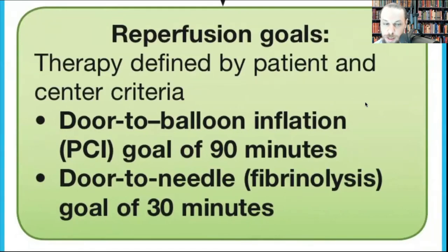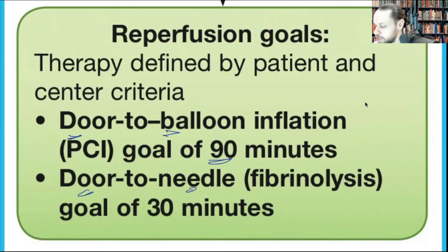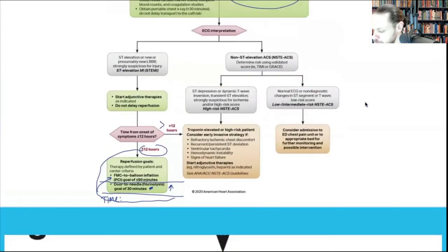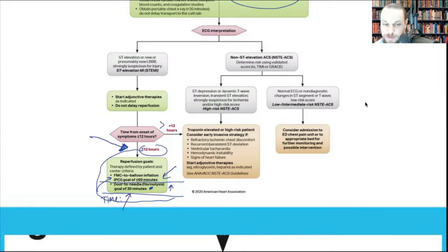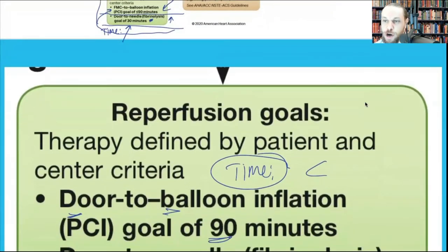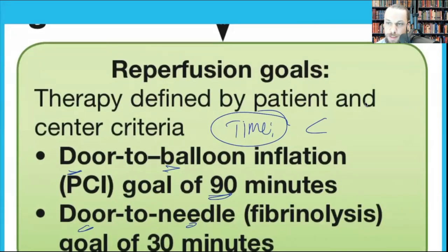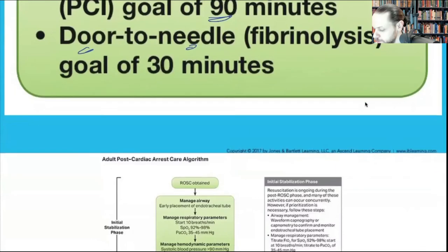Door-to-balloon time must be under 90 minutes; door-to-needle time for fibrinolysis must be under 30 minutes. Onset-of-pain history is obtained to confirm the patient is within the 12-hour treatment window. Reperfusion therapy is only done if symptoms are 12 hours or less in duration. Bringing patients to the wrong facility forces ER holds and inter-facility transfers — many patients are transferred weekly due to incorrect initial destination.